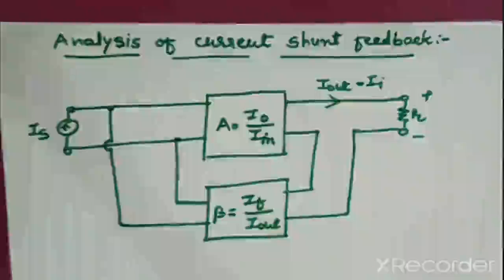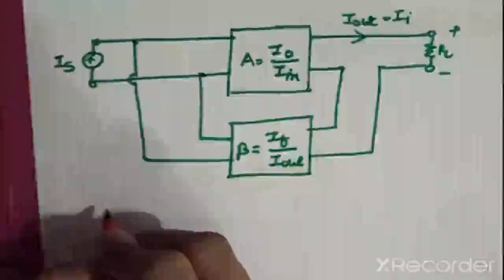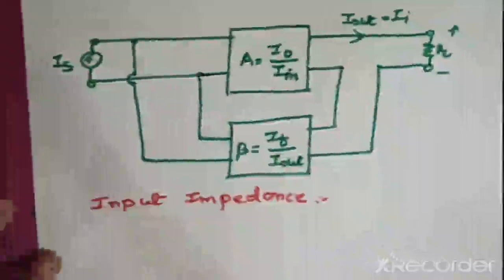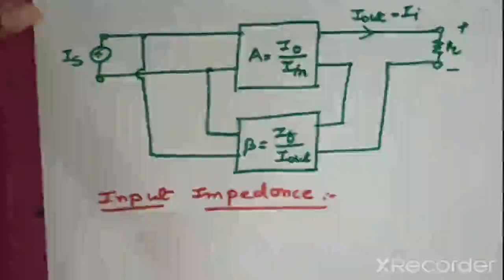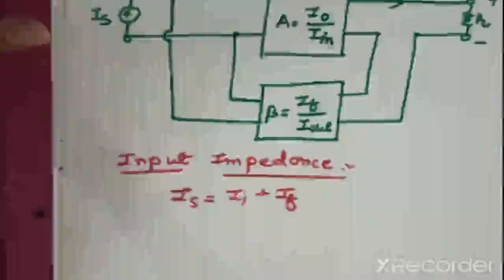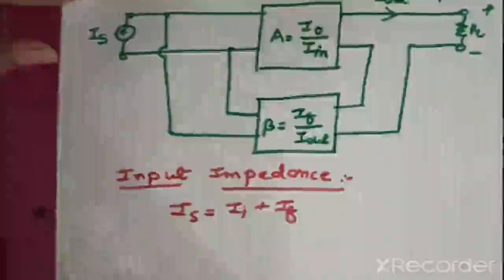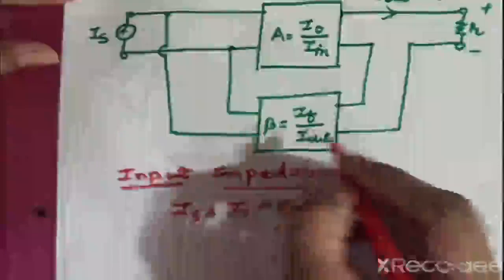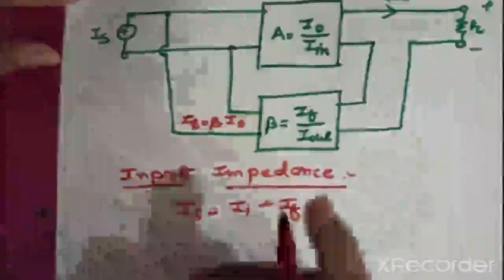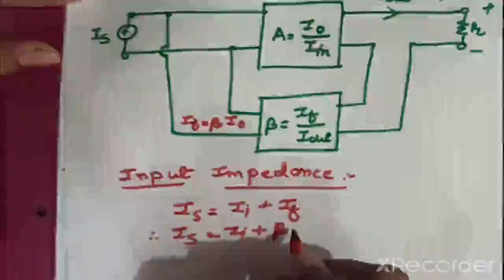Now let us derive the input impedance. We have IS equal to II plus IF, where IS is the input current, II is the input component, and IF is the feedback current. From the feedback equation, IF is equal to β·AI·IP. Putting the value of IF into the equation, we get IS equal to II plus β·AI.